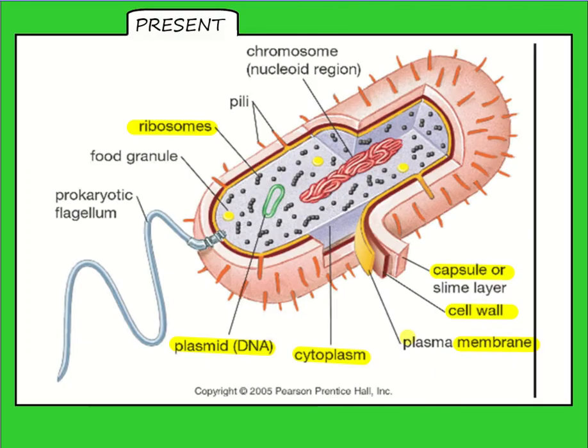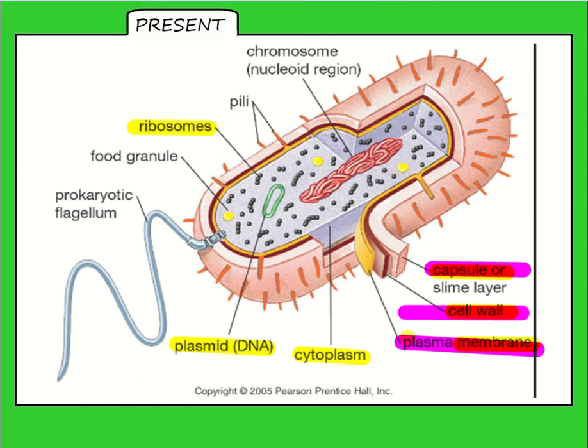This is what a typical prokaryotic cell looks like. Their morphology — the way they are shaped — varies, and different types may or may not have some of these structures, but they will all share the same basic structures. As you can see, they have a cell membrane, a cell wall, and then a capsule or slime layer.